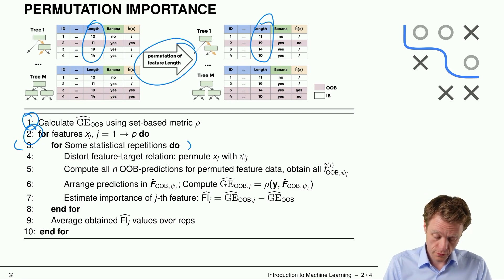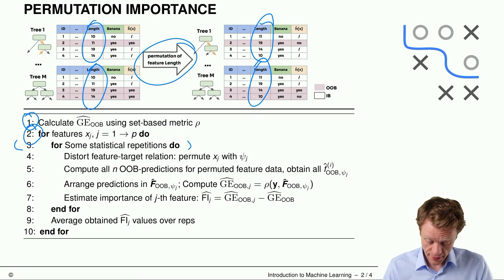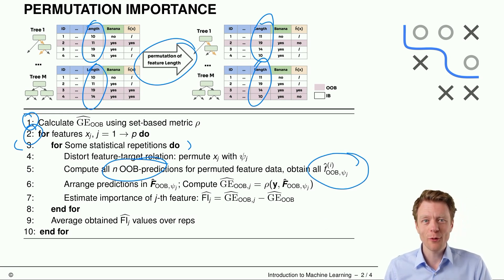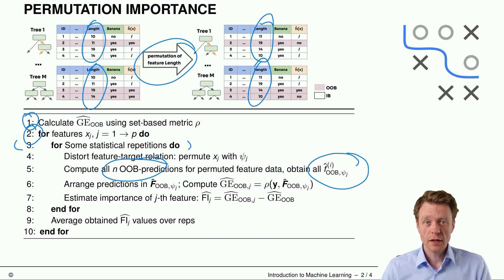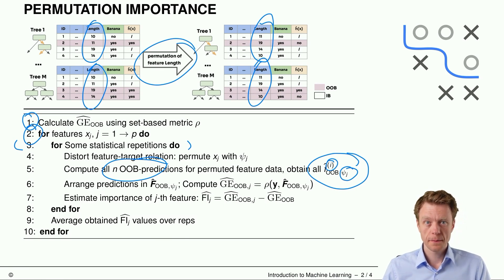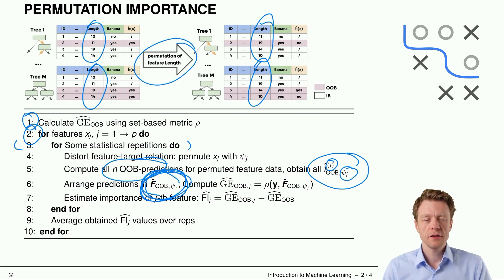You do this for all the bootstrap samples — you permute the original data and the bootstrap sampling is a step after that. Then you compute all the OOB predictions for the permuted feature data: f̂_i,OOB,ψ_j. This is the predicted value for the i-th observation when feature j is permuted. You do this for all n observations and arrange these predictions in f̂_OOB,ψ_j for the j-th feature.